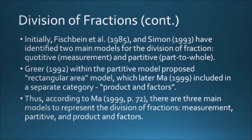Scholars Richmond and Simon identified two main models for the division of fractions: qualitative, meaning measurement, and partitive, meaning equal sharing. Another model was included by Ma in 1999 — a rectangular area model, considered as a category named 'product and factors.' So Ma considered three main models: measurement, partitive, and product and factors.